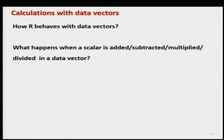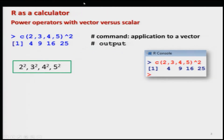When we have a data vector, how do addition, multiplication, power operator, etc. work in R? My objective is to explore how R behaves with data vectors — what happens when a scalar is added, subtracted, multiplied, divided, or when a power operator is applied to a data vector. I will take some examples to explain how things work.